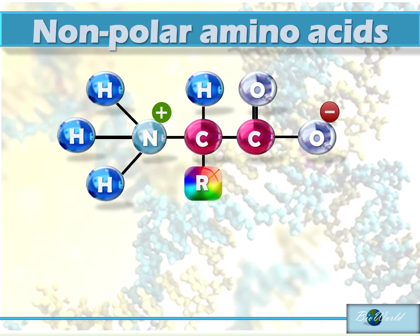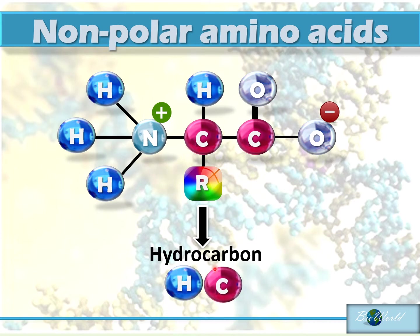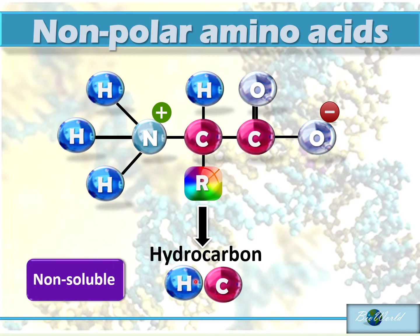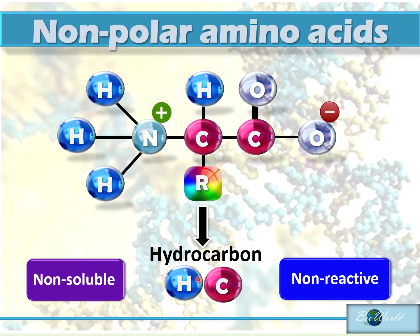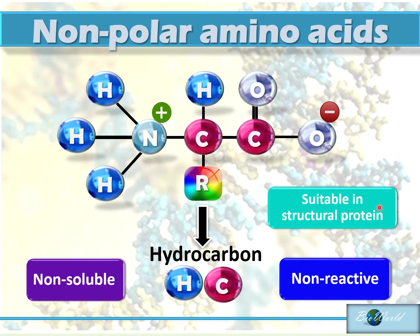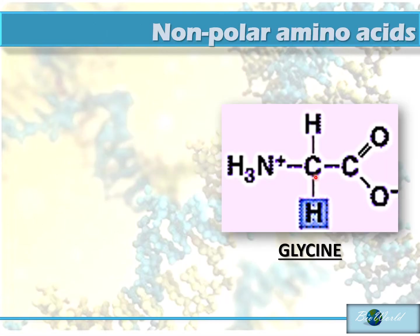Let's begin with the non-polar amino acids. Non-polar amino acids have side chains made up of hydrocarbons, which contain either hydrogen or carbon with hydrogen. Carbon and hydrogen are non-polar and non-soluble, making these amino acids non-reactive. Proteins with non-polar amino acids are very suitable as structural proteins such as the proteins of your hair or skin. A simple non-polar amino acid has a side chain that is only hydrogen.